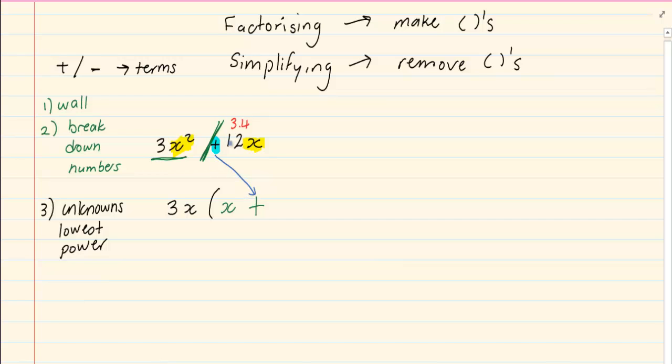Notice I put a plus because there was a plus in this question. Right now let's look at the second term. If I remove a 3 and I remove an x then I would be left with a 4. Because remember 3 times 4 is equal to 12.